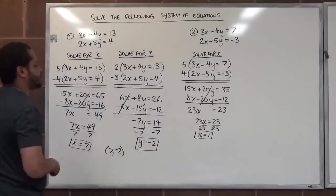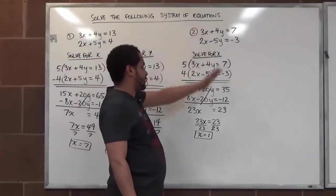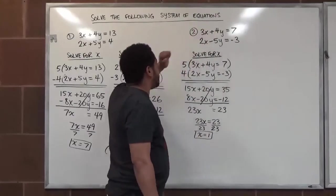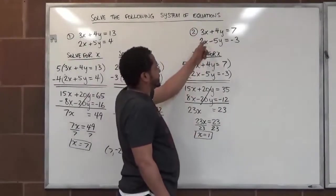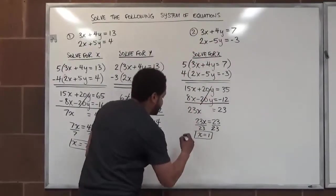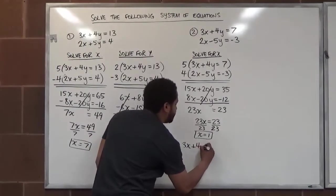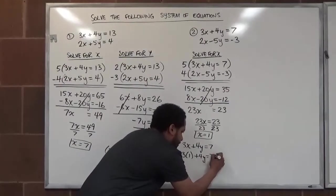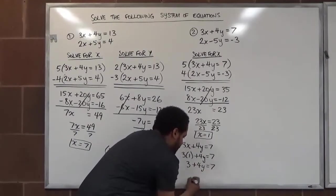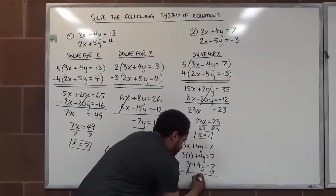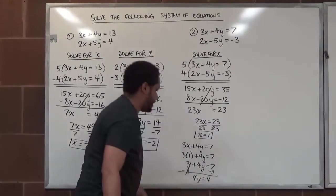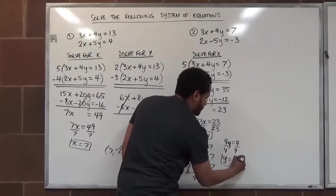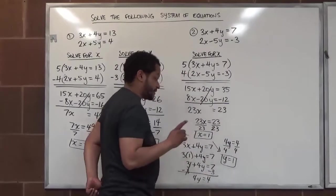Now we'll substitute our x solution into one of the original equations to get y. Taking the top equation: 3x plus 4y equals 7. Substituting x equals 1 gives 3 times 1 plus 4y equals 7, so 3 plus 4y equals 7. Subtracting 3 from both sides gives 4y equals 4, and dividing by 4 gives y equals 1.